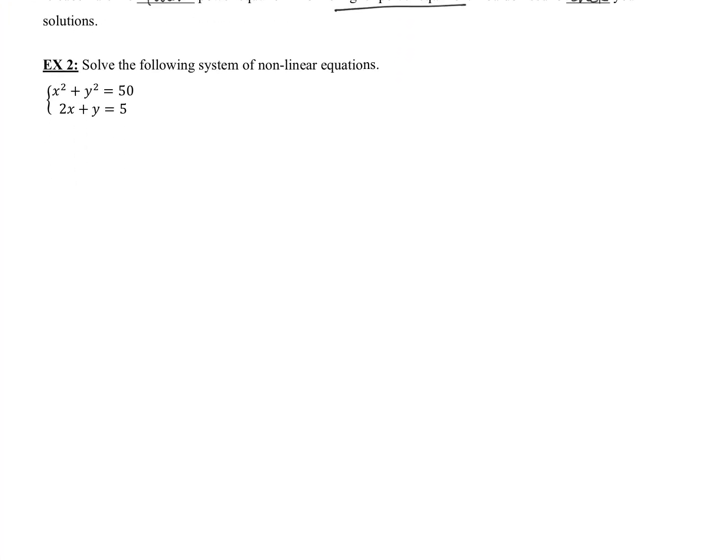So now let's look at Example 2 — solve the following system of non-linear equations. There's a bit of a note here: the bottom equation is actually a linear equation, but the system is not considered linear because the top equation is a circle. They all have to be linear to be considered a linear system. So because we have x squared plus y squared, it's considered non-linear.